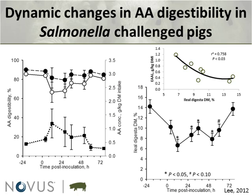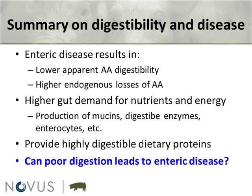Looking at the dry matter content of digesta, it goes down as animals become infected and develop diarrhea. We found a relationship between endogenous amino acid losses and the amount of dry matter present in the digesta. Practically speaking, animals with loose stools are probably not digesting or absorbing well, and on top of that are excreting more endogenous nitrogen. To summarize: lower ileal digestibility is associated with higher endogenous losses — the animal digests fewer amino acids while secreting more into the gut lumen, increasing nutrient and energy demand. We need to provide highly digestible dietary proteins.